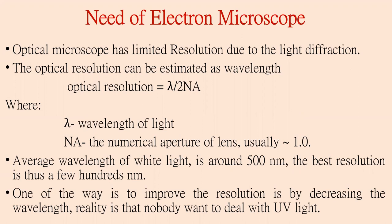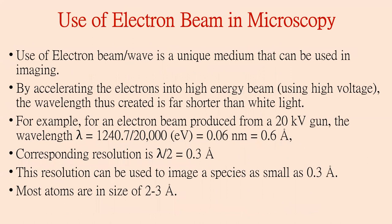One way to improve the resolution of the microscope is by decreasing the wavelength of the light incident on the specimen. In reality, nobody wants to deal with UV light due to its adverse effects. Instead, we can use the electron beam in microscopy, generally abbreviated as electron microscopy. The use of an electron beam is a unique medium for imaging. Electrons are accelerated due to high voltage, and this high energy beam of electrons has a wavelength far shorter than white light.